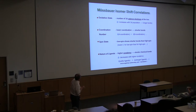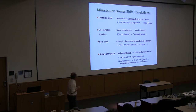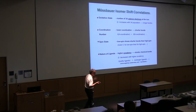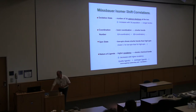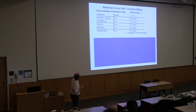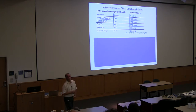In summary, the isomer shift depends on oxidation state, coordination number — four-coordinated compounds have shorter bonds than six-coordinated compounds — spin state, and the nature of the ligand. Whether we have a soft or hard ligand matters: sulfur compounds have much shorter bonds and have lower isomer shifts than oxygen-ligand compounds. For example, going from six-coordination to four-coordination, the isomer shift drops due to shortening of the bond length, and going from chloride to sulfide, we again have a drop in isomer shift.